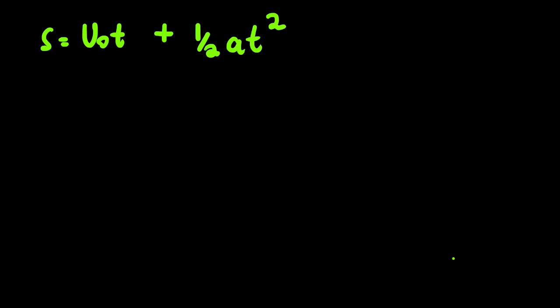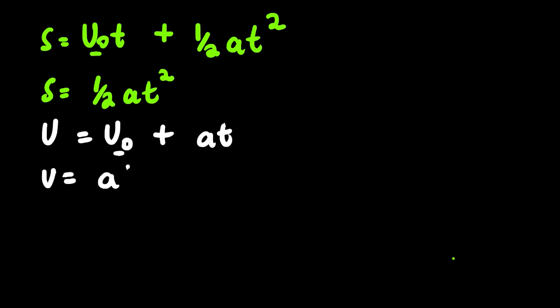We can use s equals the initial velocity multiplied by time plus half of the acceleration times time squared. We can quickly rearrange this equation. We know that the initial velocity is zero, then zero multiplied by this t will simply result into zero, so we have half a t squared. The second equation which also involves acceleration and time is the final velocity equals the initial velocity plus at. We know very well that the initial velocity is zero, so we have at.